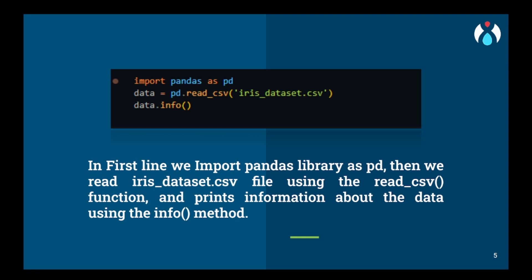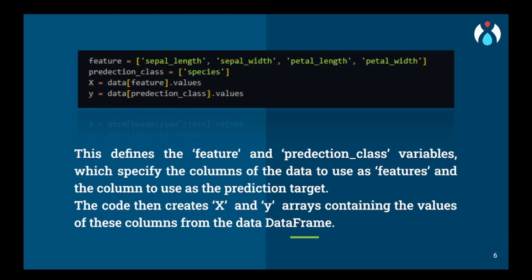This is the iris dataset, but when we do the actual practical we will be dealing with the iris dataset as well as the Pima diabetes dataset. First, we will import the pandas library and use the read_csv function to read the CSV file, then use the data.info() function to get information about the data — like the data type and how many columns there are.